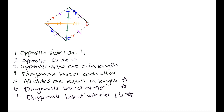In the next video, I'm going to prove that the diagonals in a rhombus bisect at 90 degrees and that the diagonals bisect the interior angles.